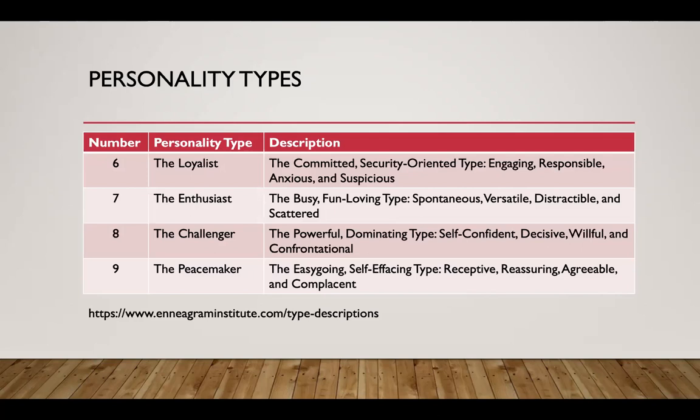Seven is the enthusiast - the fun-loving, spontaneous, versatile, yet scatterbrained person. My wife calls this the dad personality. Some professors are enthusiasts - full of energy but don't organize or grade things well. Eight is the challenger, the CEO - the powerful, dominating type. Self-confident, decisive, willful, and confrontational. They're very direct, not afraid of getting into fights, dominant personality types, often thinking their perspective is right.